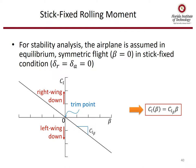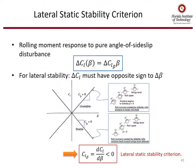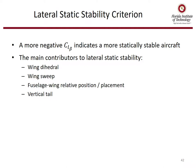For stability analysis, the airplane is assumed in equilibrium symmetric flight with beta equals zero and in the fixed condition with delta-R and delta-A equals zero. The rolling moment coefficient as a function of sideslip beta has a slope that needs to be negative for stability. A more negative C_L beta indicates a more statically stable aircraft. The main contributors to lateral static stability are wing dihedral, wing sweep, fuselage-wing position and placement, and the vertical tail.